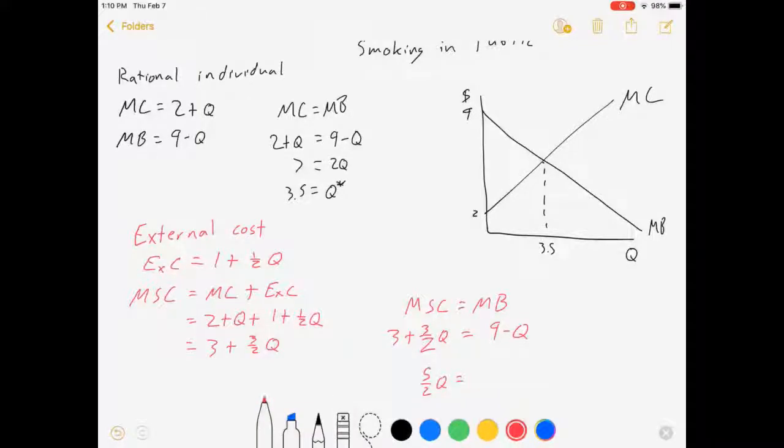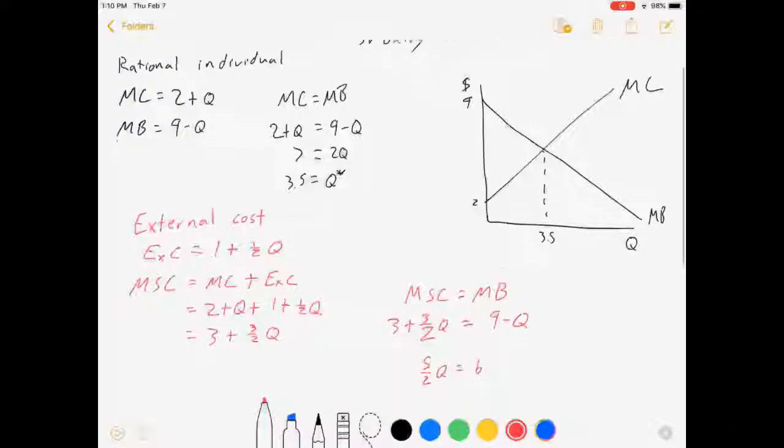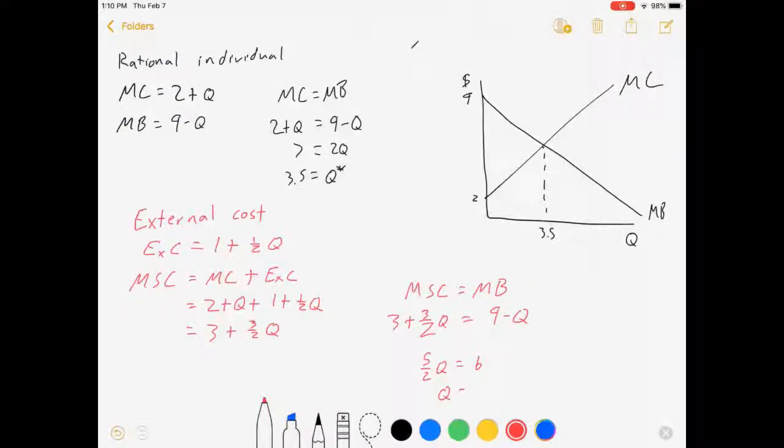Equals 6. That's 12 fifths, so Q is equal to 2.4. And that's our optimal Q, where all of the costs are accounted for in society in this smoking decision.